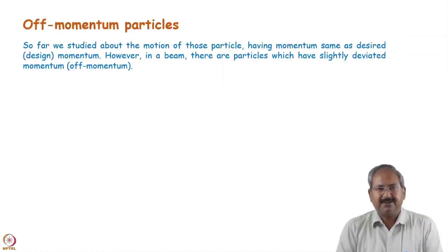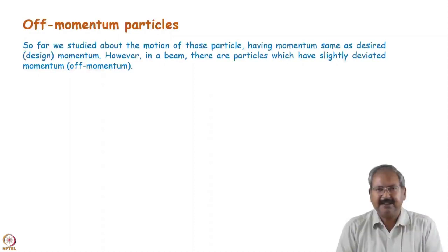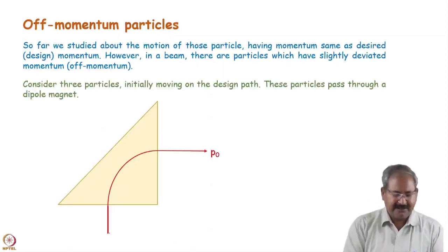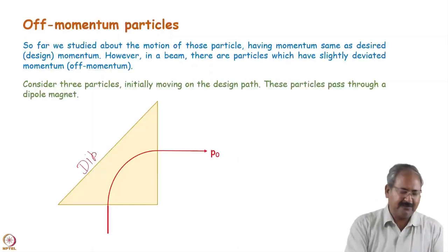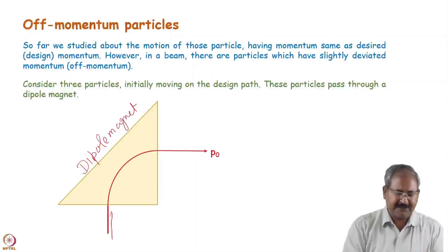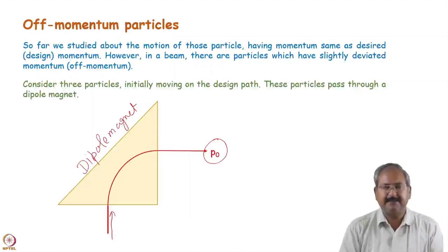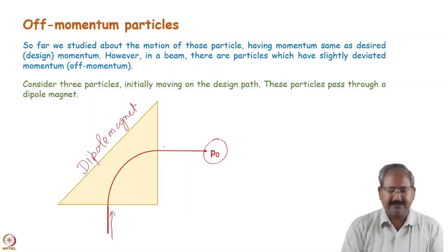So far we have talked about only particles which have the same momentum as the design momentum. But in practice we have a bunch of particles — many particles — and each particle may have a slightly deviated momentum from the design momentum. Now consider three particles. This is a dipole magnet and this is the design trajectory, which is plotted here with design momentum p₀ — meaning this design trajectory is designed considering the momentum as p₀.